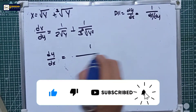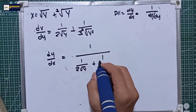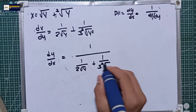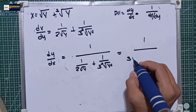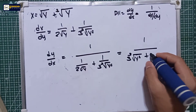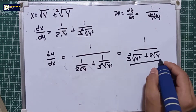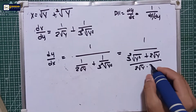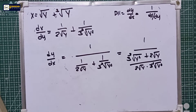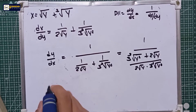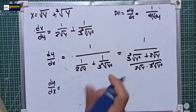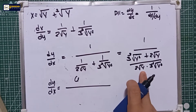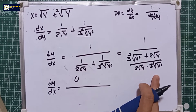Applying D11, dy over dx is equal to 1 over (1 over 2 square root of y plus 1 over 3 cube root of y squared). We can rewrite this as: the numerator is 1, and the denominator becomes (3 cube root of y squared plus 2 square root of y) all over (2 square root of y multiplied by 3 cube root of y squared). So dy over dx equals 6 times square root of y times cube root of y squared.